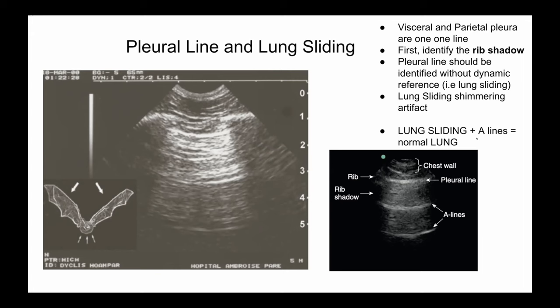If you have normal lung sliding and an A-line pattern, that is considered a normal lung. As a brief reminder, A lines are generated by the ultrasound beam going from the probe to the pleura and bouncing back and forth. At each successive reflection, the probe interprets the depth as greater. So the A lines are placed at equidistant depths deep to the original pleural line.